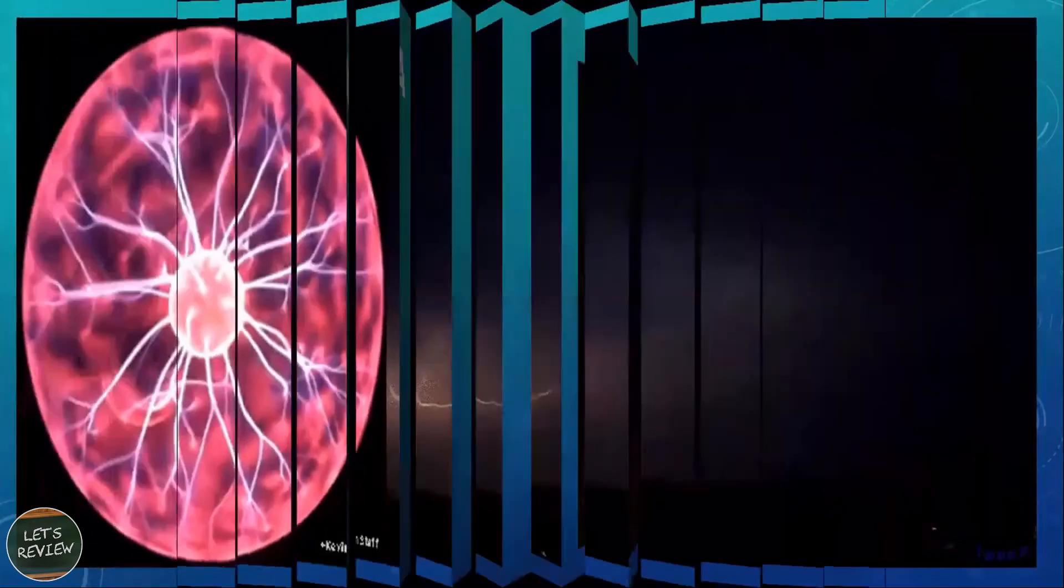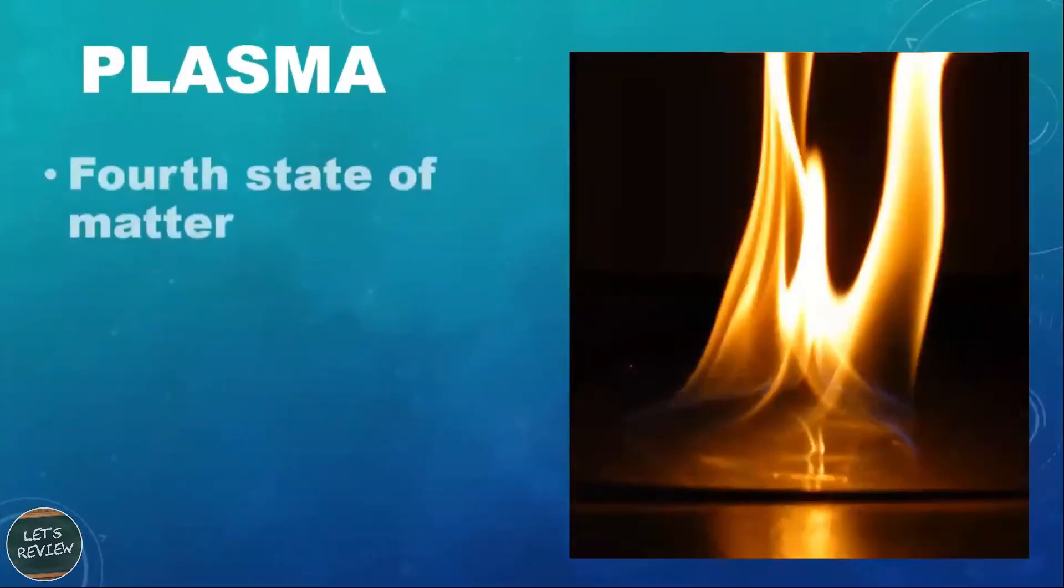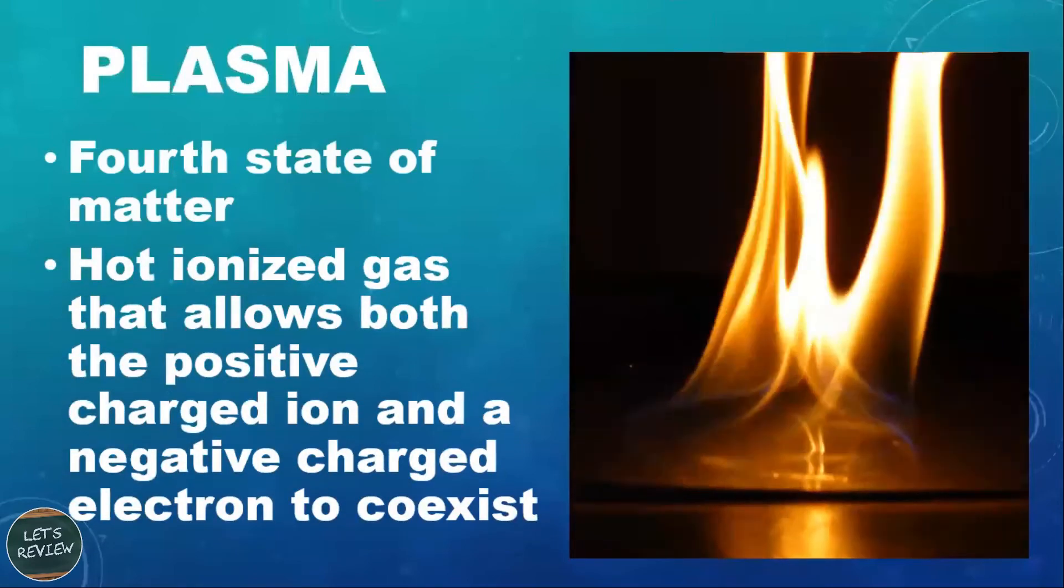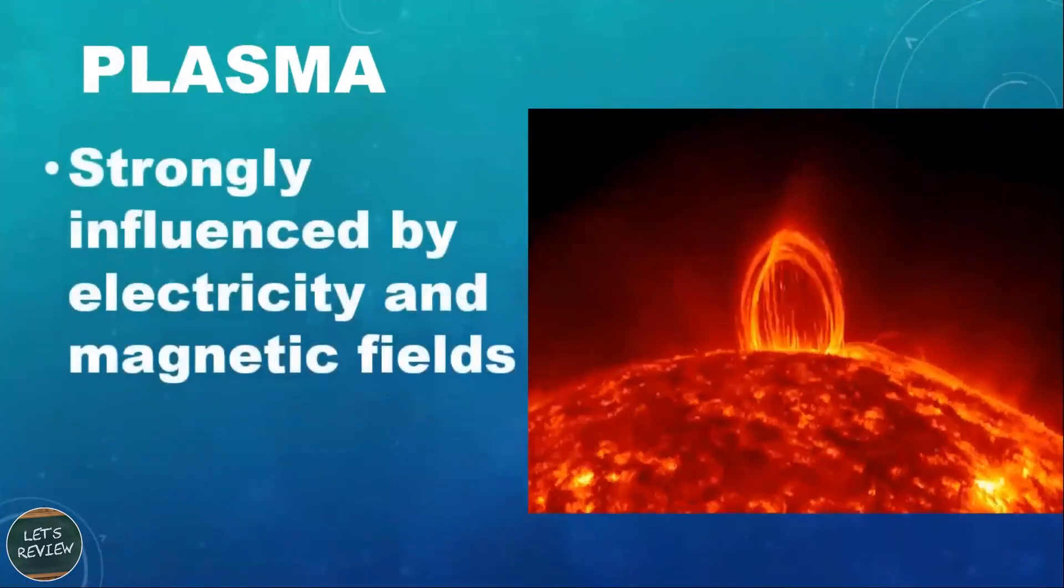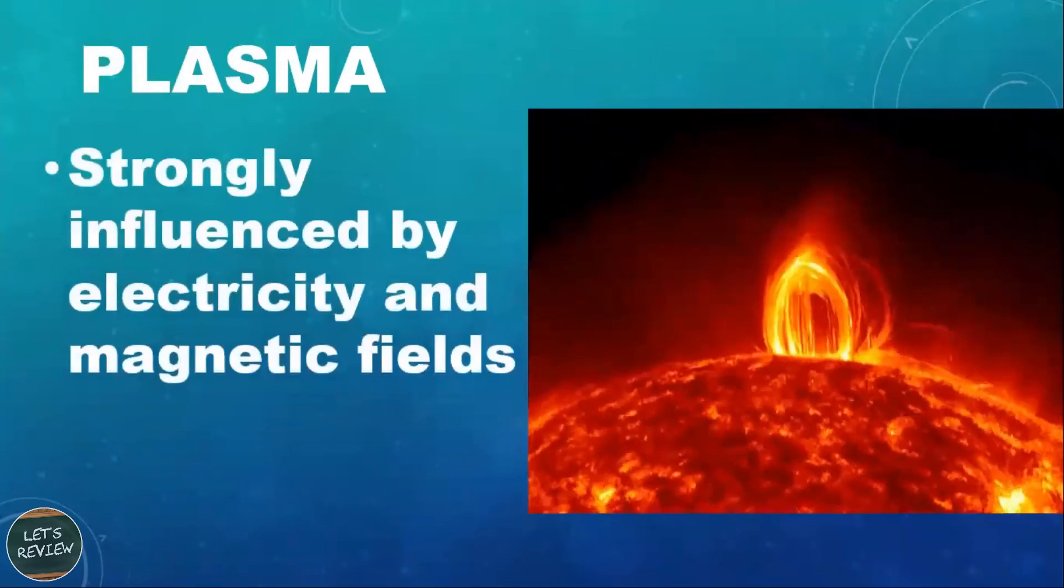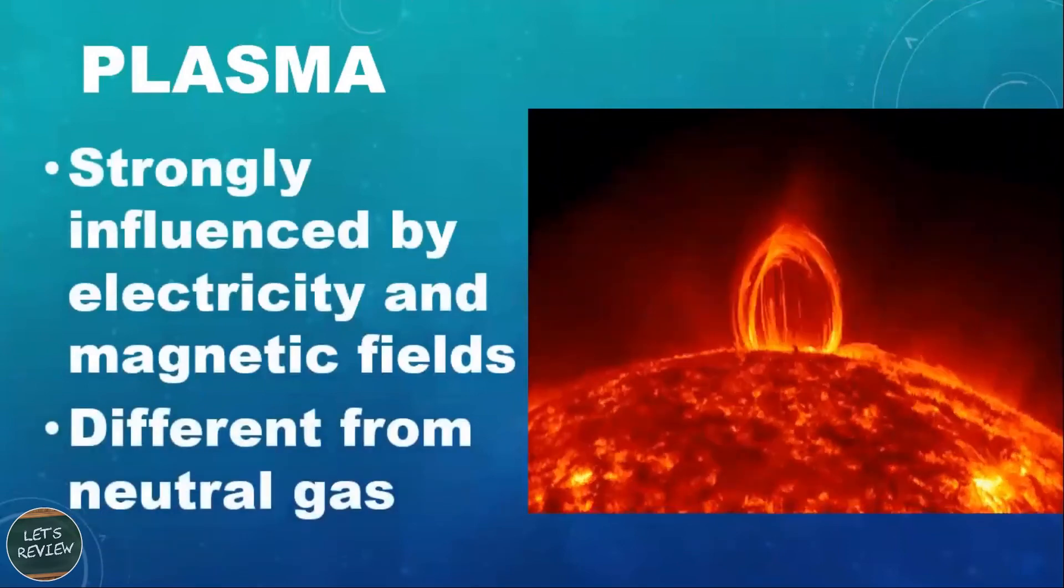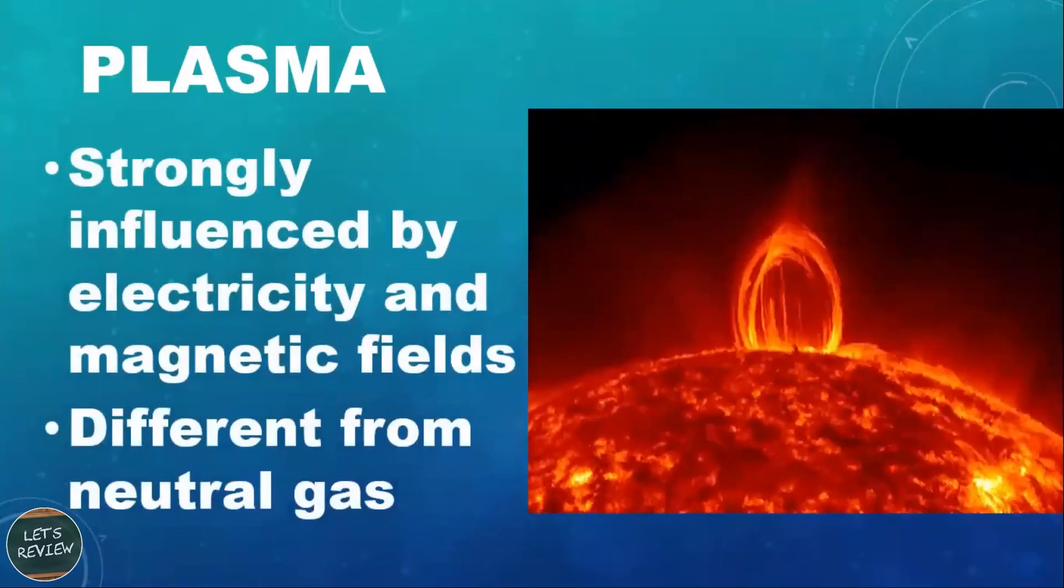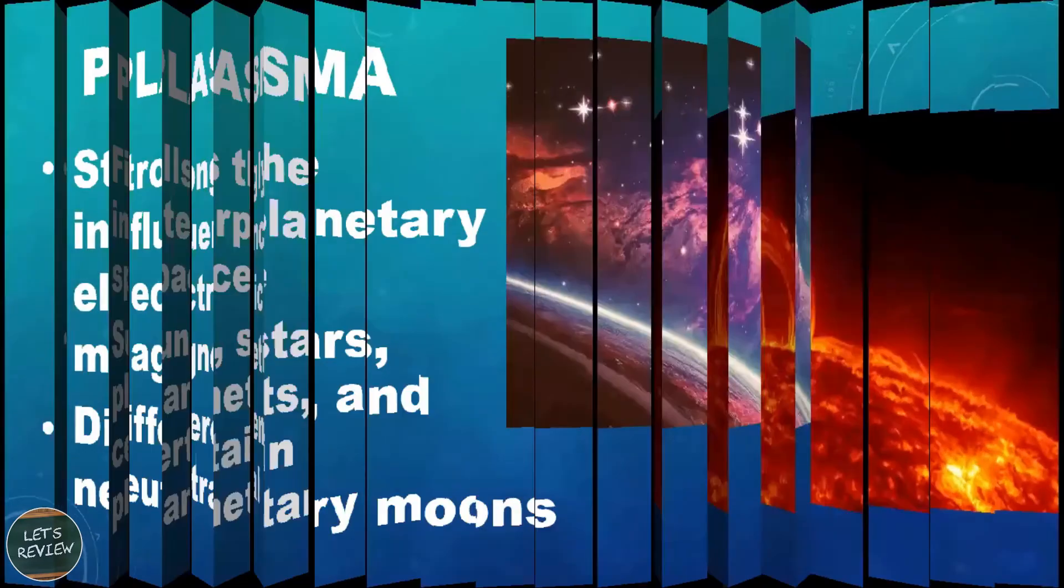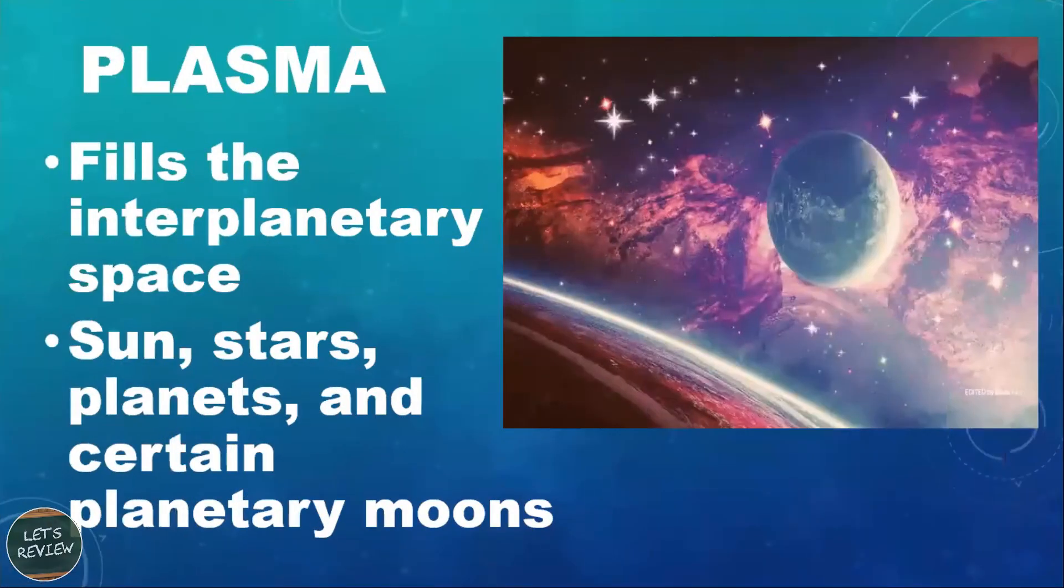Next is plasma. It is the fourth state of matter and is characterized as hot ionized gas that allows both the positively charged ion and the negatively charged electron to coexist. They are strongly influenced by electricity and magnetic fields, and they are different from neutral gas because they are ionized gases. It fills the interplanetary space like the Sun, stars, planets, and certain planetary moons.